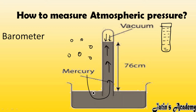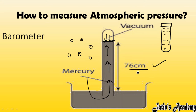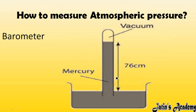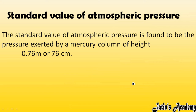This higher atmospheric pressure outside forces the mercury to move upward, because every substance moves from higher pressure to lower pressure. From above, the weight of mercury pushes it downward. A point is reached where mercury neither moves upward nor downward — this equilibrium level is at 76 centimeters. So mercury stops at 76 cm, which can also be written as 0.76 meters.